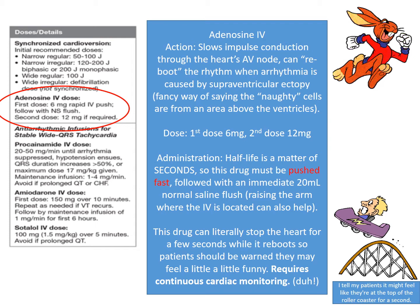It only stops for a few seconds, so it's okay — we're going to bring them back. Six milligrams pushed very fast, followed immediately by a flush. It's not a two-minute push — you push, flush, and sometimes even raise the arm. If that first dose doesn't work, we try a second dose, hoping the SA node takes over when the heart comes back.